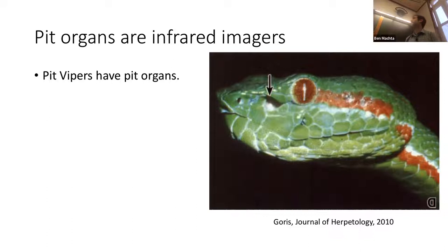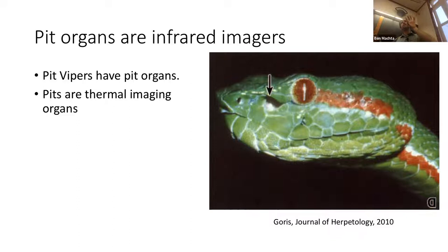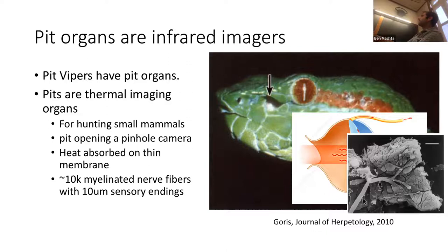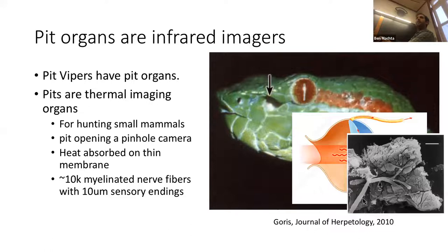The main project I'm going to tell you about is the pit organ — the arrow is pointing to it here on a pit viper. Pit vipers are named because of this pit organ, not because they live in pits. The pit is a thermal imaging organ used for hunting at night: the snake sets up with a cool background and waits for warm creatures. Inside the pit opening — a pinhole camera — thermal radiation from the world impinges on a very thin membrane containing around 10,000 thin myelinated nerve fibers with 10-micron nerve endings. This provides a low-resolution thermal image.